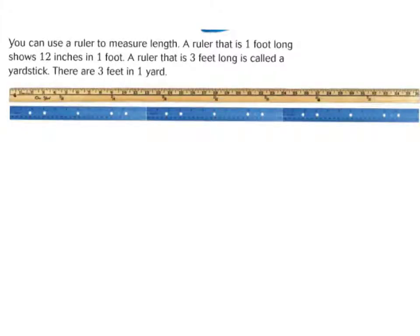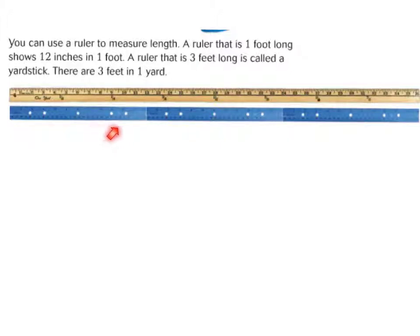Two very important measurement tools that you use when measuring length are the yardstick and the ruler. Each ruler measures 12 inches, and 12 inches is equal to 1 foot. So if we had 12 plus 12 plus 12, that would be 1, 2, 3 feet, and we would add up 12, and that would give us 36 inches.